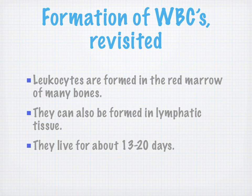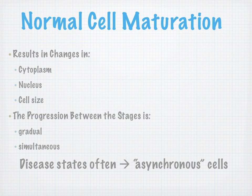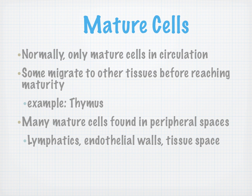Formation of white blood cells revisited: leukocytes are formed in the red marrow of many bones and can also be formed in lymphatic tissue. They live for only 13 to 20 days. Normal cell maturation results in changes in the cytoplasm, the nucleus, and the cell size, and the progression between stages is gradual and simultaneous. Disease states often equal asynchronous cells, which we'll discuss in class. Normally only mature cells are in circulation, though some migrate to other tissues before reaching maturity, like the thymus.